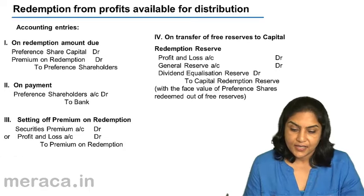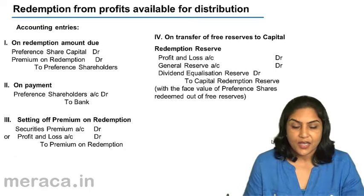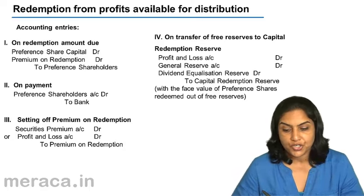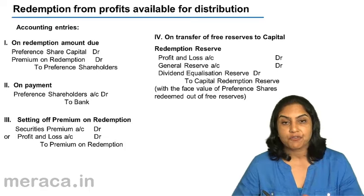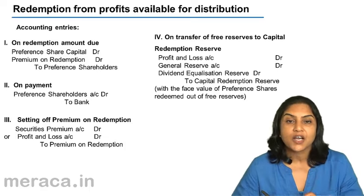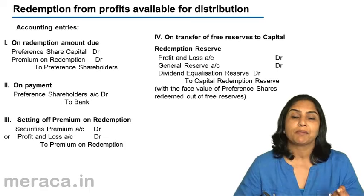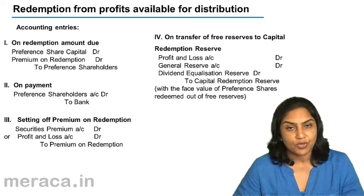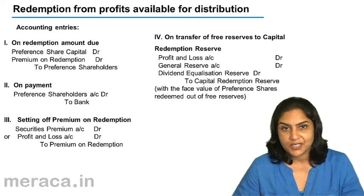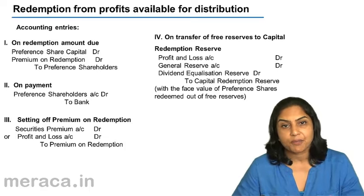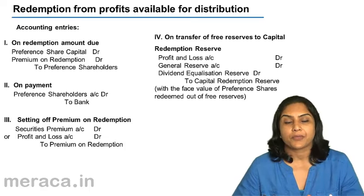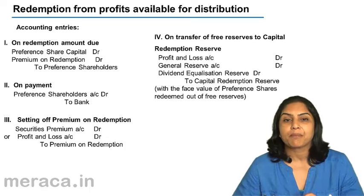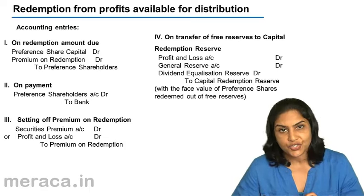Let us now understand the accounting entries when redemption is from profits which are available for distribution — redemption from free reserves available for distribution. What do we mean by free reserves? The reserves which are free for distributing to the shareholders as dividend. These are normally in the profit and loss account credit balance, the general reserve account, or maybe some companies retain a dividend equalization reserve.